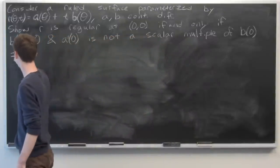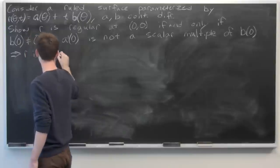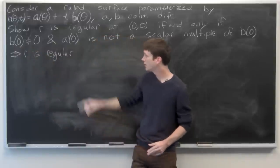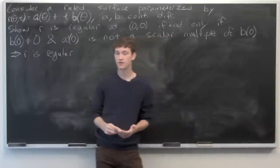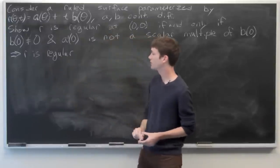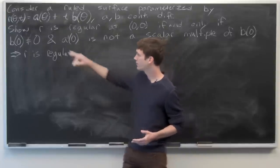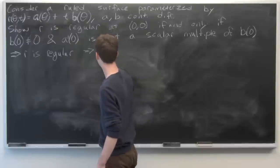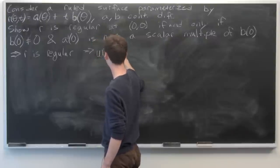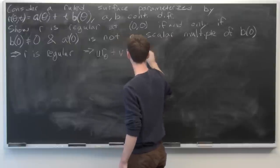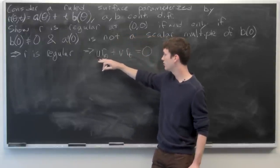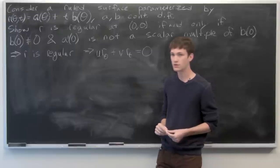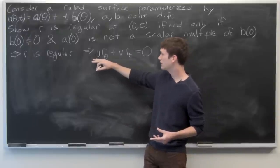To show the first direction, we'll suppose r is regular and show that implies b(0) ≠ 0 and a′(0) is not a scalar multiple of b(0). For r to be regular, a and b are continuously differentiable, and the partial derivatives satisfy: u·r_θ + v·r_t = 0 if and only if u and v are equal to zero.